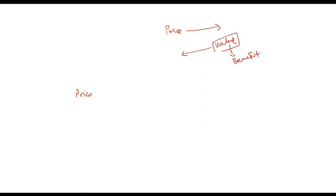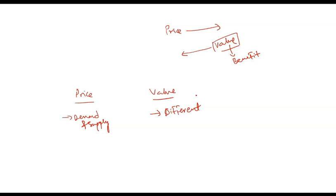Price and value depend on different factors. Price depends on the demand and supply of an asset — it is fixed in the market and anyone can buy or sell at the same price. Value, on the other hand, varies from investor to investor because it represents the benefit each individual derives from the asset.